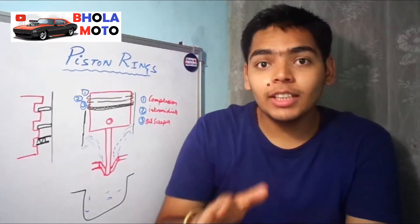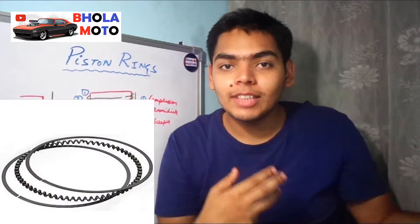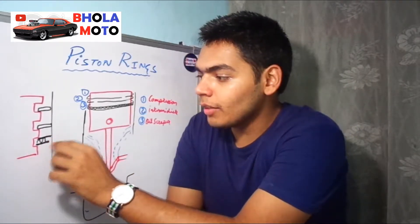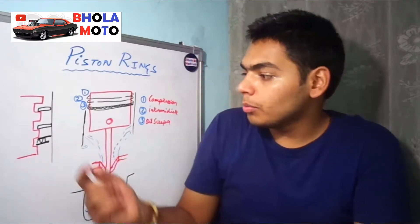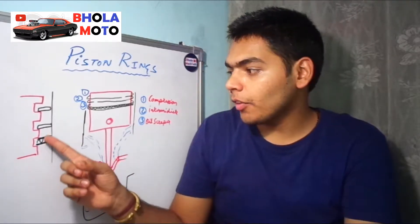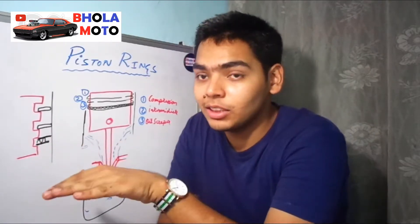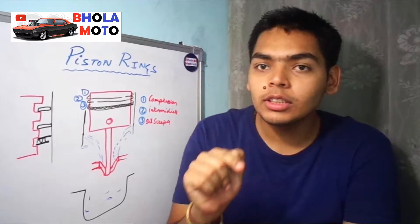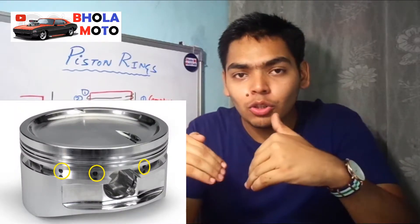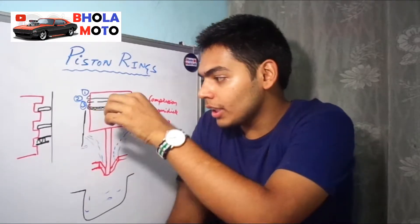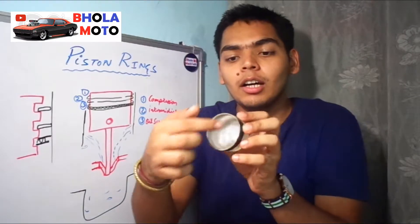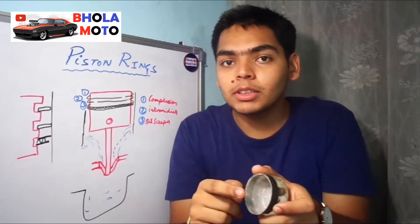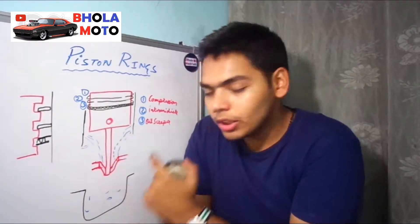Now let's talk about the third ring first — the oil scraper ring. As the name suggests, it scrapes the oil. It is shaped with two rings and one spring in between them. The downward ring scrapes the oil, and this slot has several holes so that the oil can flow through them. The oil enters from here, flows on the internal walls of the piston, and then drops back down to the oil sump.